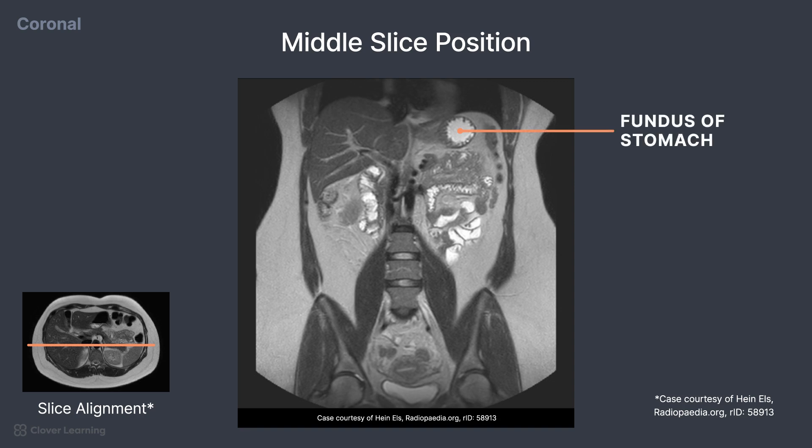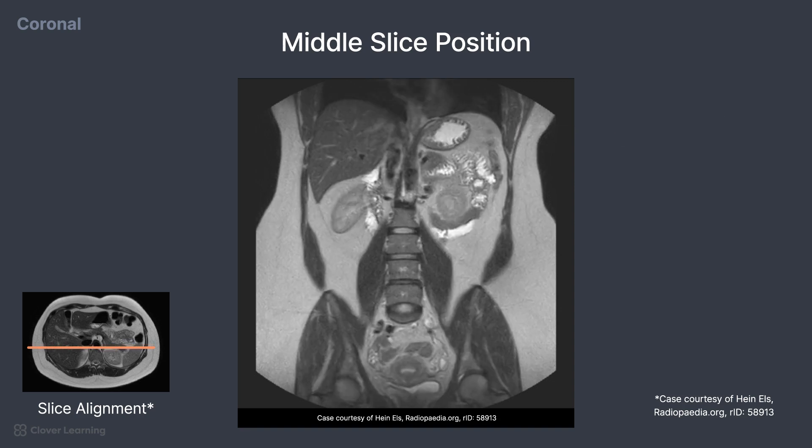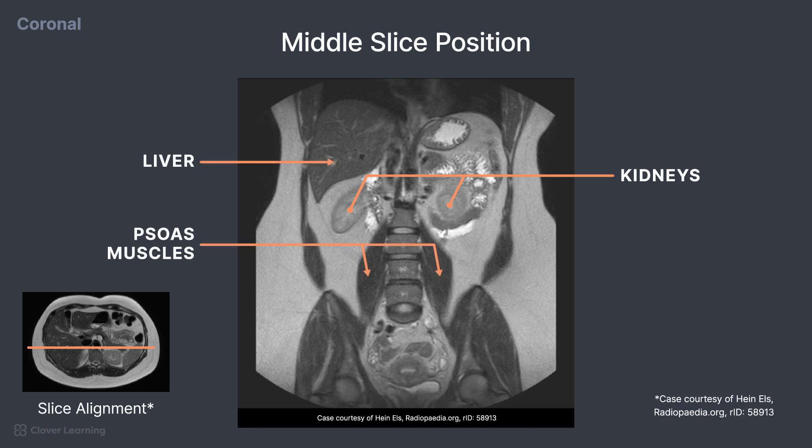with the rounded fundus portion better demonstrated. Now we begin to see the kidneys emerge, just superior to the psoas muscles and inferior to the liver.